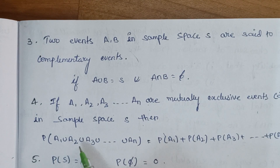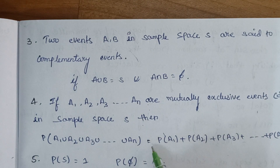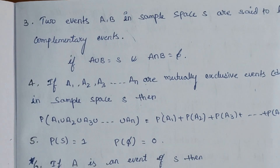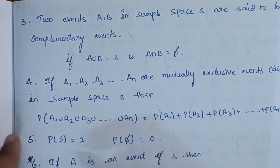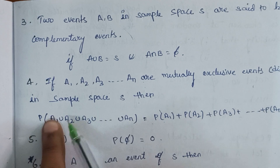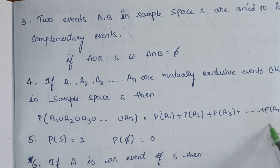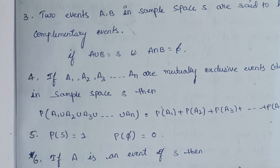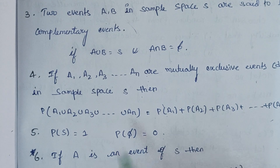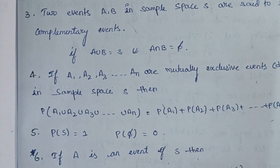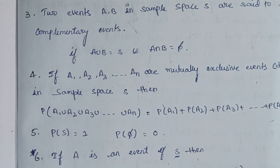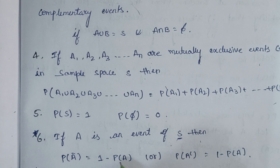For n events: A1 union A2 union ... union An — this union is nothing but addition. So P(A1) + P(A2) + ... + P(An) is equal to 1, and P of each event is greater than or equal to 0. If A is an event of sample space S, then P(A complement) is equal to 1 minus P(A).